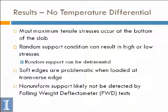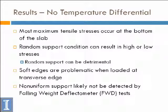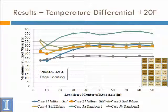Initial results for no-temperature gradient: tensile stresses are primarily high at the bottom of the slab, except when you're at the transverse edge. Random support actually isn't good for a variety of reasons because it can produce high or low stresses and you're not sure exactly. Around three-foot by three-foot areas, you tend to start seeing these problems or at least spikes in the stresses. Soft edges are clearly problematic — if you're going to build something, you want to make sure that if you have non-uniformity there are no soft edges.